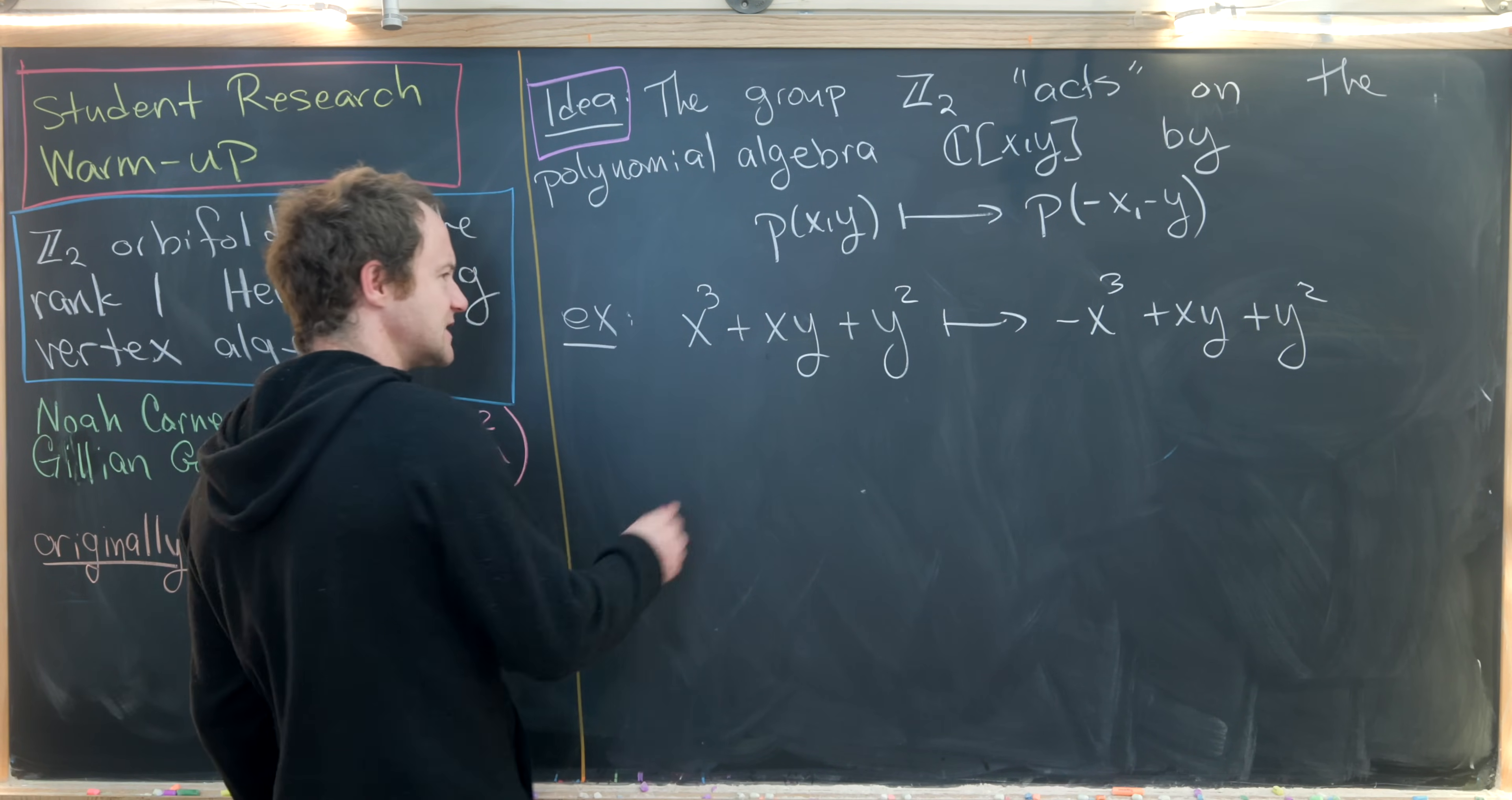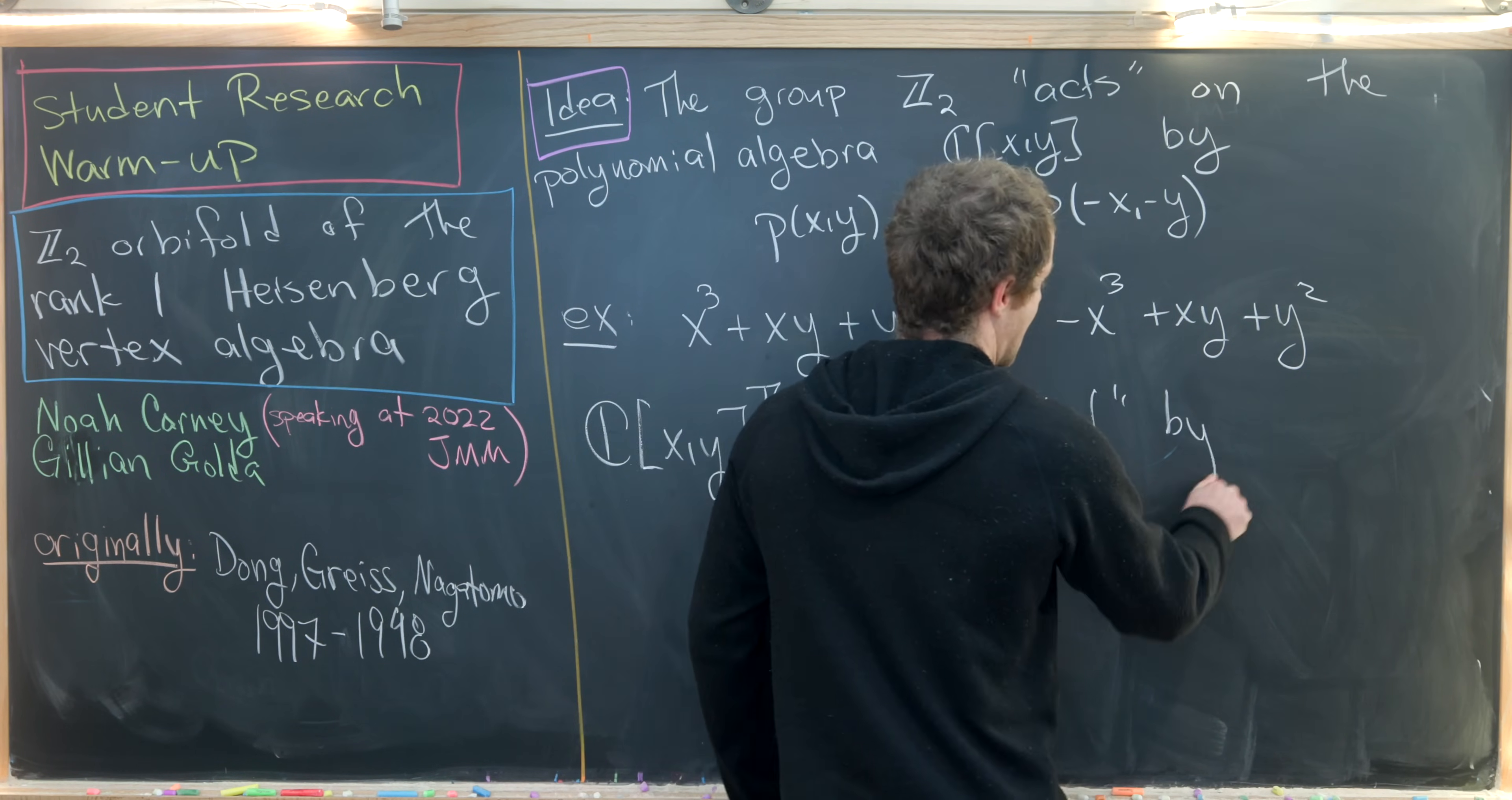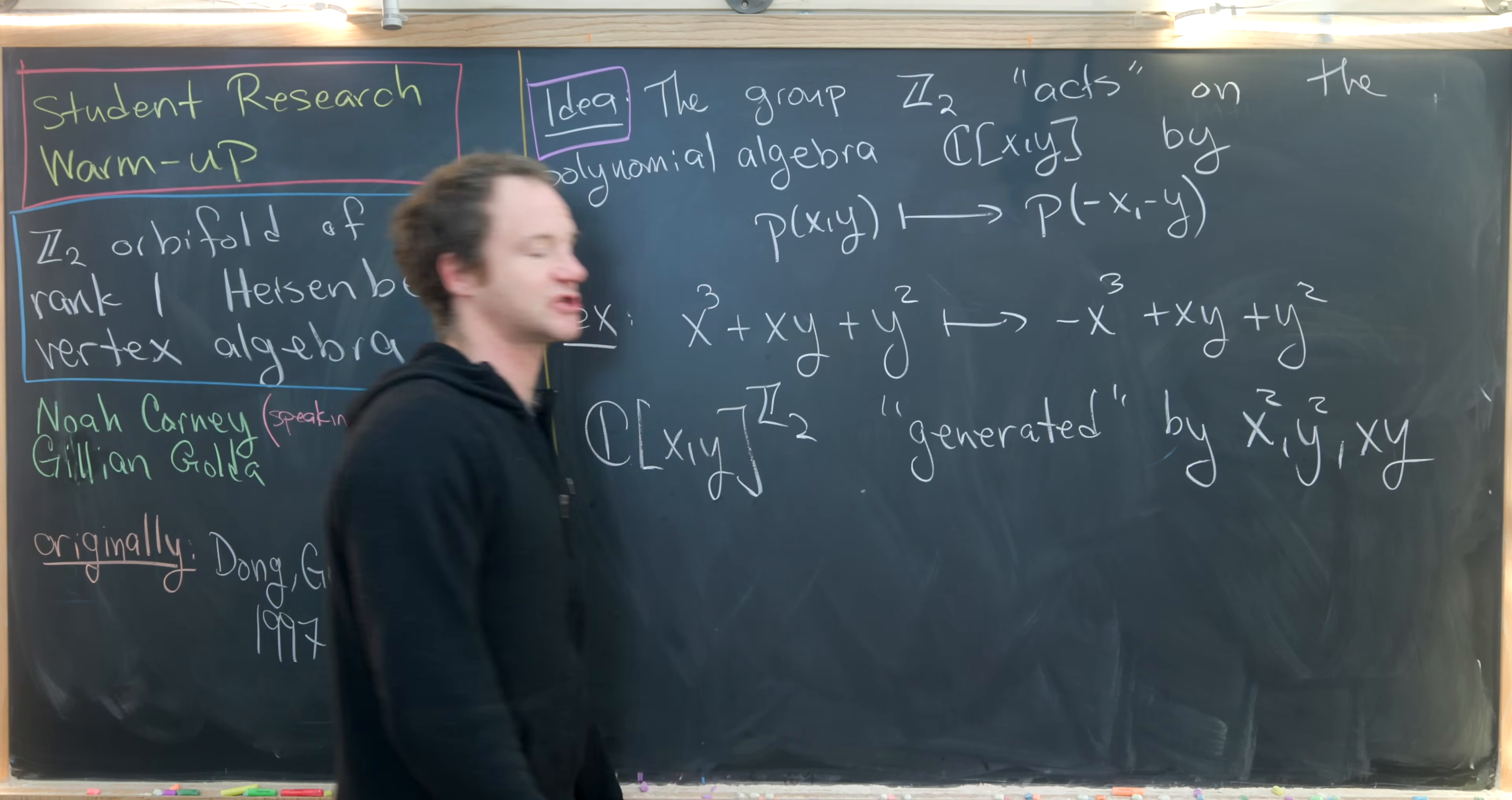Maybe it's not too hard of a leap to see that in this case, our invariant polynomial ring C[X,Y]^{Z2} could be said to be generated by X squared, Y squared, and XY. What I mean by generated by those three things is that everything in this invariant polynomial ring can be written as a polynomial in these three terms.